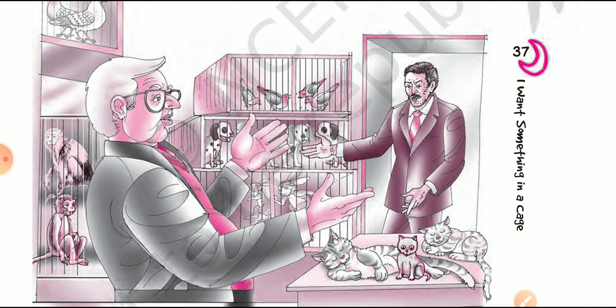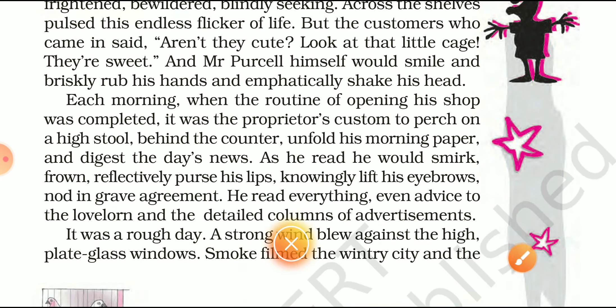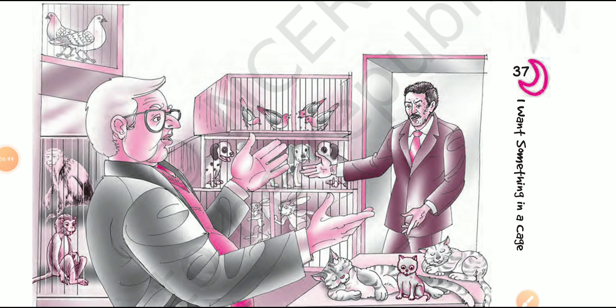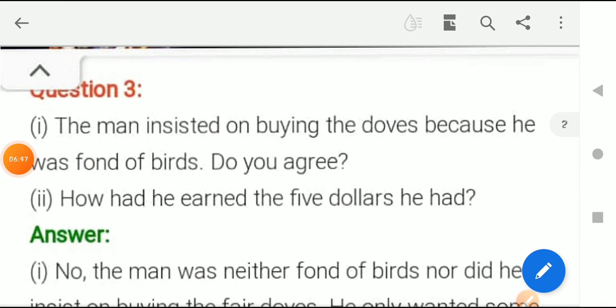The man somehow managed to leave the shop, and the first thing he did when he stepped outside was open the cage and let the birds free. He watched those birds until they vanished from his eyes. Inside the shop, Mr. Purcell was watching the man behave so strangely, and when he saw him release the birds he felt very insulted. This was the whole story — a brief summary before moving on to the question answers.